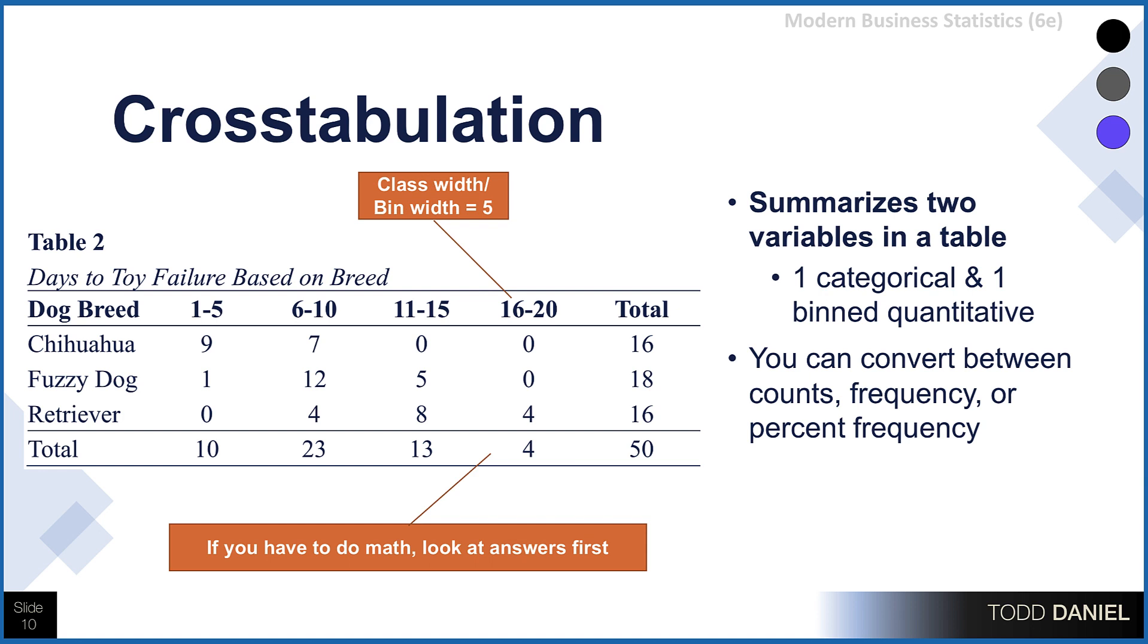Well, if you are working on a test question that asks you to do math, remember that the correct answer is among the multiple choice options. So for example, if I'm asked how many fuzzy dogs waited six to ten days before chewing the stuffing out of their toy, I know that this is 12 out of 50 dogs. Now that's roughly 20%. Knowing that rough estimate might help me rule out certain obvious wrong answer choices.